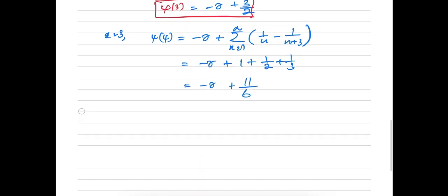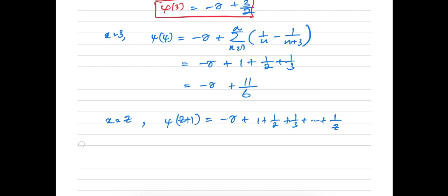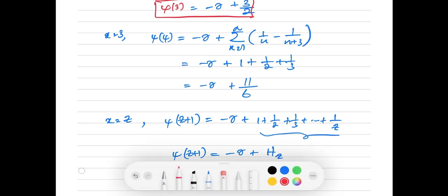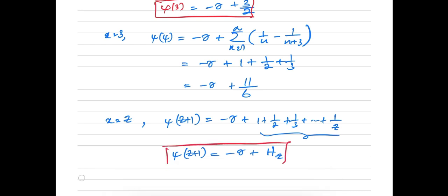When x = c in general, ψ(c+1) = -γ + (1 + 1/2 + 1/3 + ... + 1/c). We recognize this sum as the c-th harmonic number H_c. So the important result is: ψ(c+1) = -γ + H_c, giving the relation between the digamma function and the harmonic number.